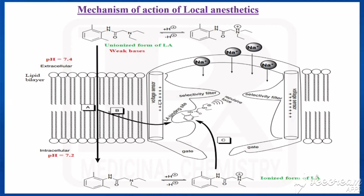In the sodium channel, we have two subunits — one is an alpha subunit and another one is a beta subunit. The alpha subunit has four domains, and each of those four domains has six segments. One of those segments is a voltage sensor, that is the S4 segment. These two shown here are the S4 segments of the sodium channel.